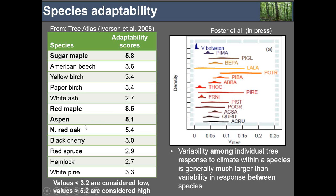Looking at variation within species in their response to climate — summarized across red maple, red oak, sugar maple, and others in response to temperature — the range of responses within an individual species is actually greater than the range that exists between species. There's much more variability within an individual species than between species, speaking to the inherent adaptive capacity a species might have to deal with climate change. We really shouldn't be giving up on certain tree species — maintaining them as part of the mix and allowing things to play out in that adaptive approach makes sense.